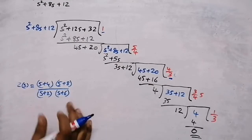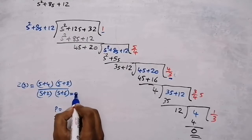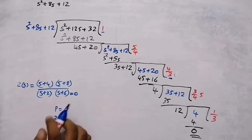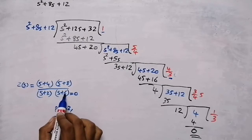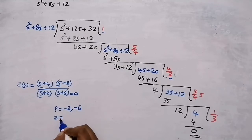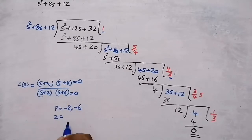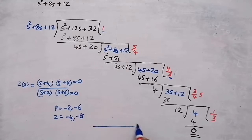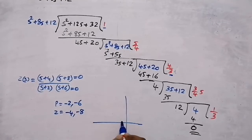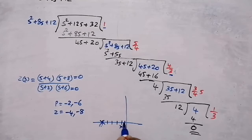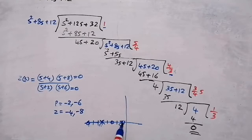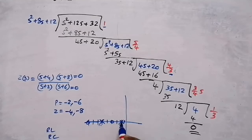To determine RL or RC, find the poles and zeros. Equating the denominator (s+2)(s+6) = 0 gives poles at s = −2 and s = −6. Equating the numerator (s+4)(s+8) = 0 gives zeros at s = −4 and s = −8. On the pole-zero plot, on the negative real axis we have a pole at −2, then a zero at −4, a pole at −6, and a zero at −8 — alternate poles and zeros.